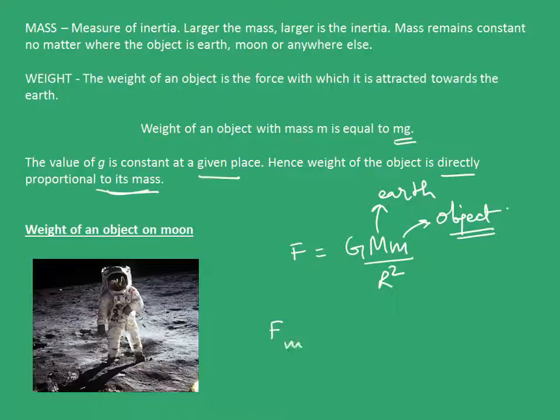The force on the moon will be GMm/r² with moon's values. Now, if we substitute these quantities and find the ratio F_moon/F_earth, we see this ratio equals 1/6. The force with which the moon attracts the person is one-sixth the force with which earth attracts the same person.